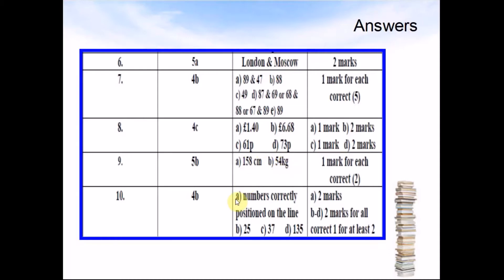Question 10: A: check on the number line. B was 25. C was 37. D was 135.